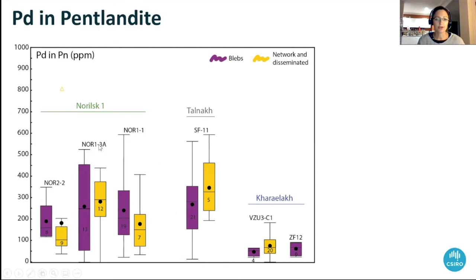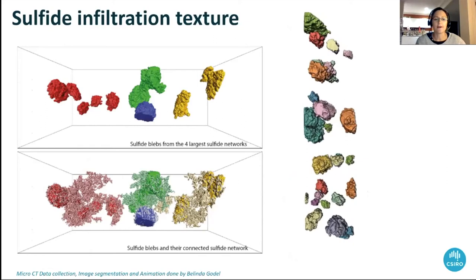Now I'm going to show you data which is palladium in pentlandite for the same sulfides that I showed you sulfur isotopic data for. Here are the results: these are the three samples from Norilsk-1, sample from Talnakh, and the samples from Kharaelakh. What we can see here is that there doesn't seem to be a real difference between blebby and disseminated sulfides for the two different sulfide populations. The palladium in pentlandite varies between one sample to the next and varies between intrusions, but doesn't seem to vary within one sample.